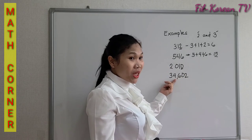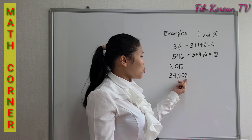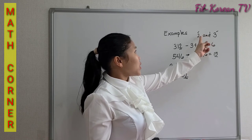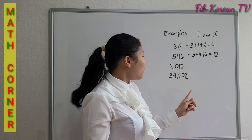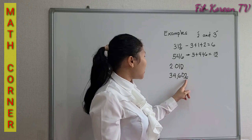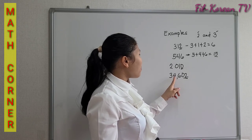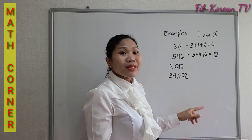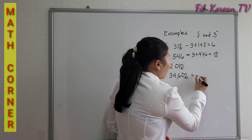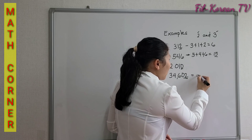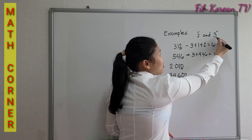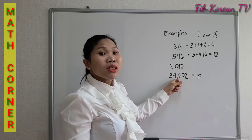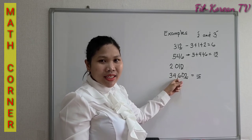34,602. This number is an even number, so it is divisible by 2. If we add the digits — 3 plus 4 plus 6 plus 0 plus 2 — the answer is 15, and 15 is divisible by 3. So this number is divisible by 6.